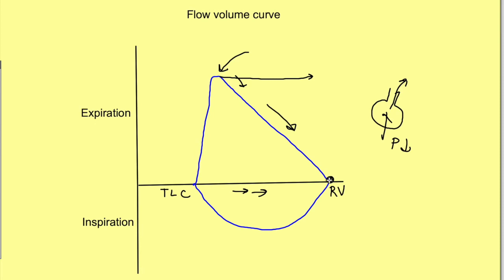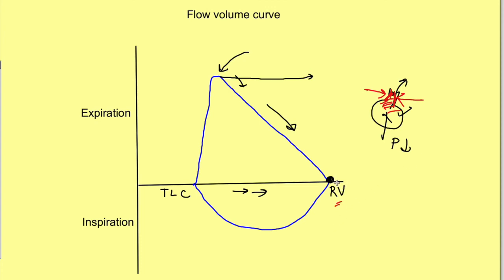Finally at residual volume, no air flows out because at this point alveolar pressure is so low that airway pressure also becomes very low, and this leads to compression of the airways. Pleural pressure becomes greater than airway pressure, causing compression of the airways at such low lung volumes, trapping the air. That is what residual volume is — at residual volume there is no flow because of dynamic compression of the airways.